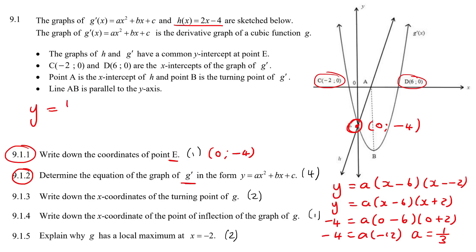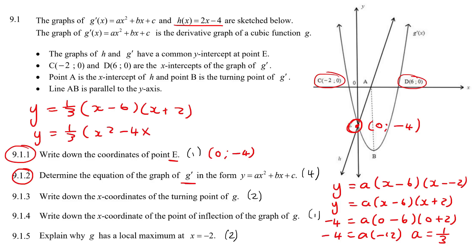So our equation is y = (1/3)(x − 6)(x + 2). Multiplying out the bracket: (x − 6)(x + 2) gives x² − 4x − 12. Then multiplying through by 1/3 gives y = (1/3)x² − (4/3)x − 4.